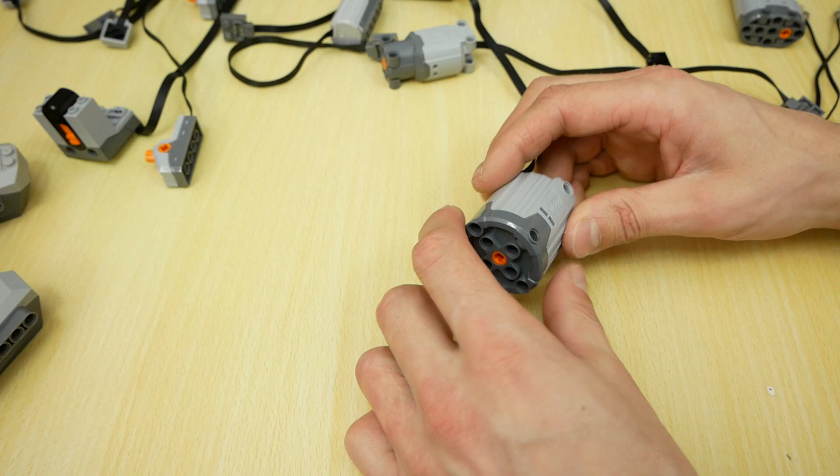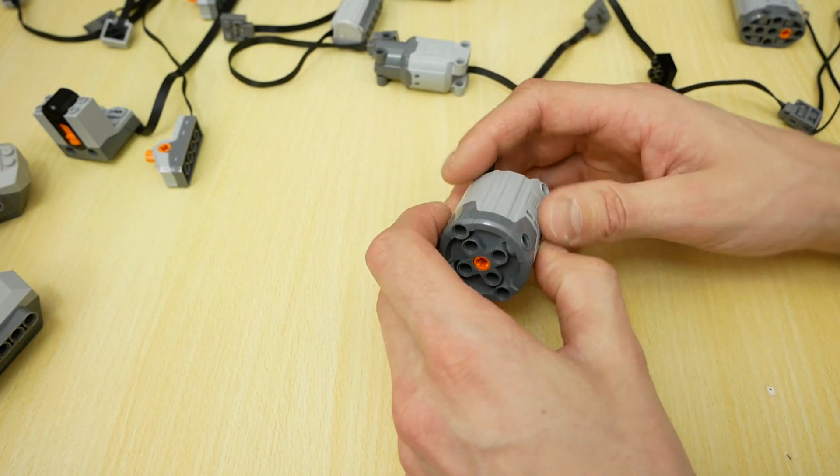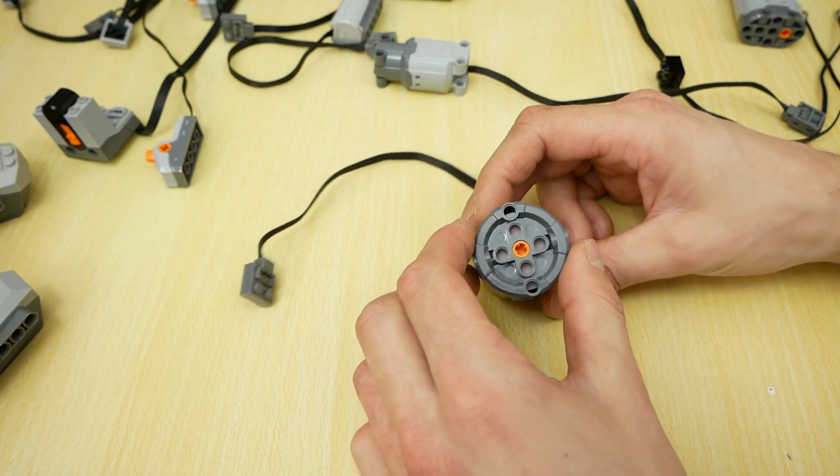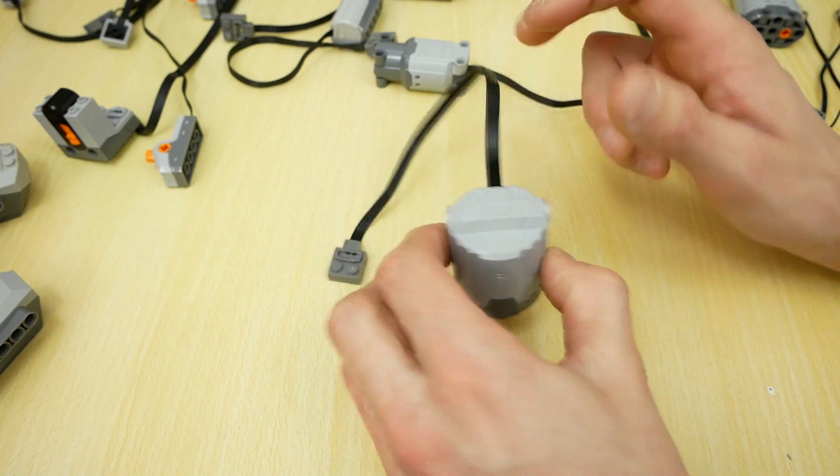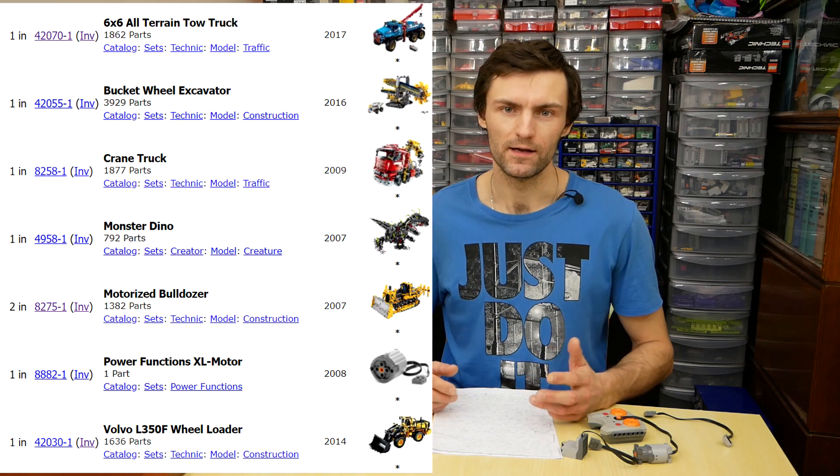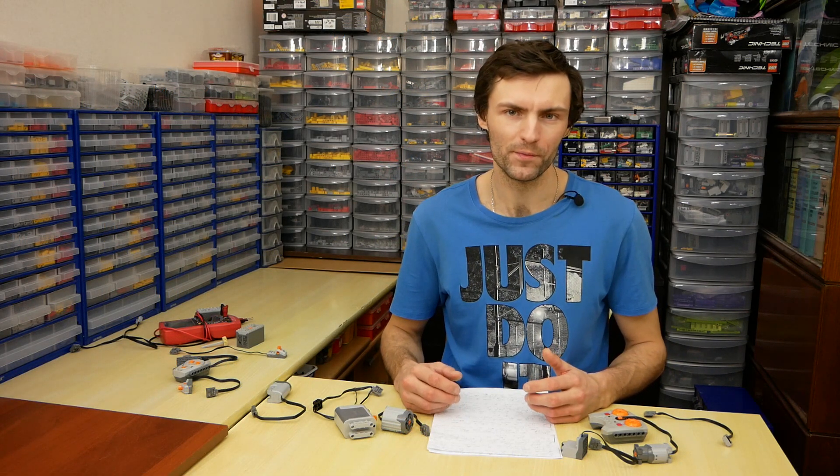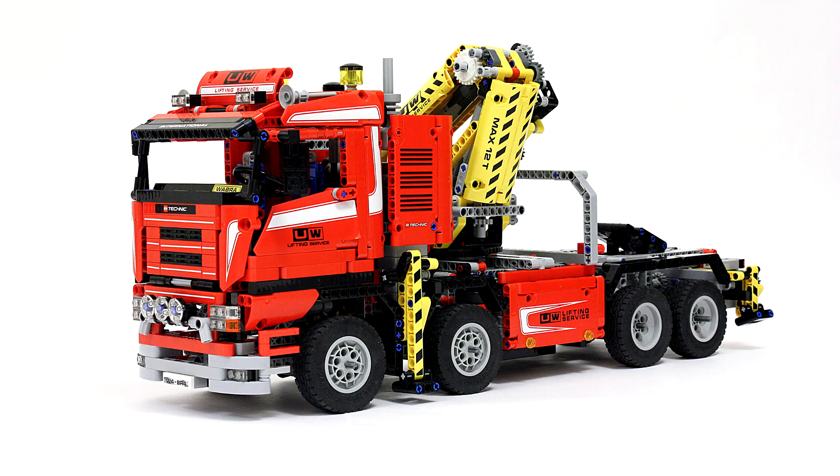The most powerful motor in power functions system is extra-large motor. Very useful for heavy models. It has very small speed, but very high torque. Two extra-large motors can be found only in one set, 8275 dozer. And only one set uses the extra-large motor not for movement. It is Grand Truck 8258.